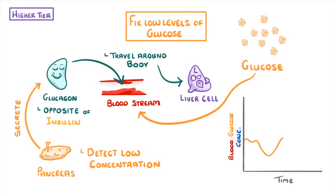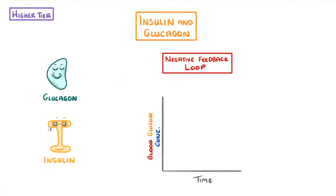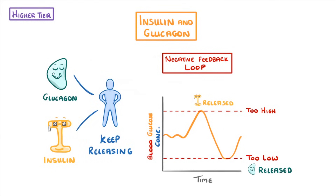If you think about insulin and glucagon together, you can see that they create a negative feedback loop. If glucose levels get too high, then insulin is released, which causes the glucose to drop down again. But if it drops too low, then glucagon is released, which causes the glucose levels to increase again. In reality, our bodies keep releasing insulin and glucagon to ensure that the amount of glucose in our bloodstream is always kept around the right levels, and this is why our blood glucose concentration constantly changes or fluctuates, rather than being a flat line.